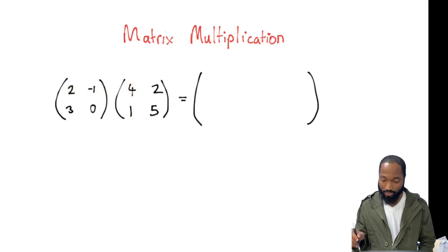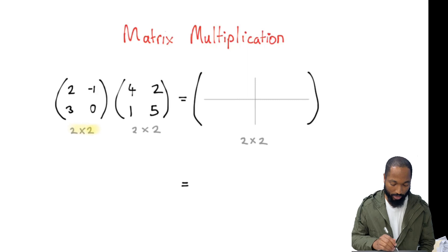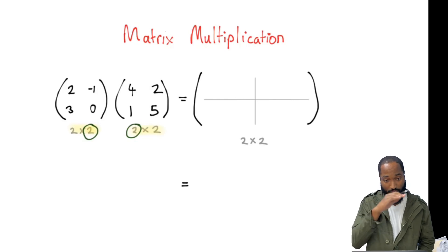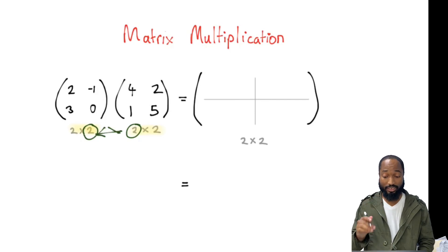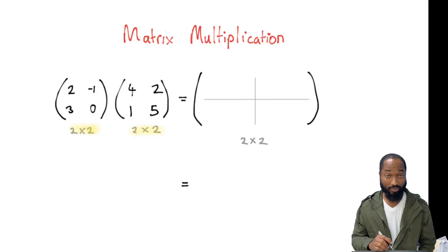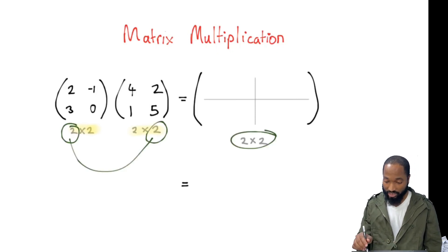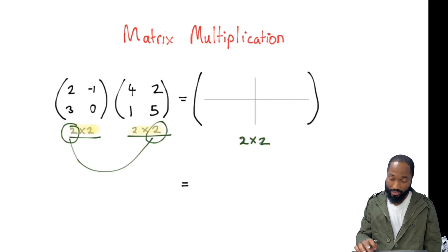Before we even jump into the multiplication, we should examine the size of each of these individual matrices, and that will give us the size of the result — the product. The size of this one is 2 by 2, the size of this one is 2 by 2. The number of rows in the second matrix must be equal to the number of columns in the first matrix. If those two numbers on the inside are not the same, matrix multiplication cannot occur. You will be tested on that in CXC. These outer two numbers tell us the size of the result matrix.